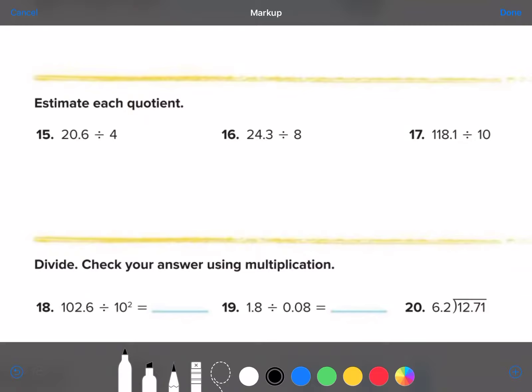Okay. Number 15. Estimate the quotient. So, 20.6. Is that closer to 20? Or, is it closer to 20? Well, let's think about this. Let me back up. We're doing compatible numbers. I wish they would have said compatible numbers on this. So, a number that's really compatible would be 20 divided by 4. Finish the problem.